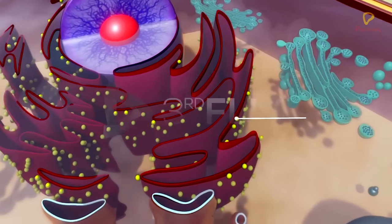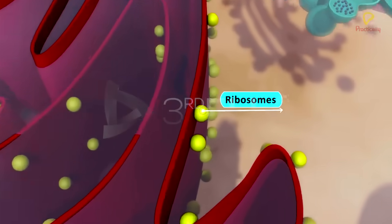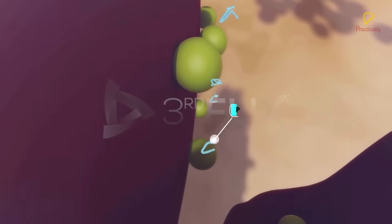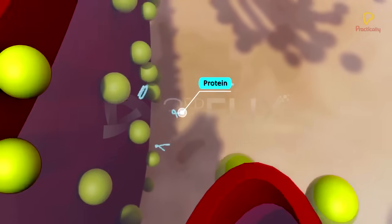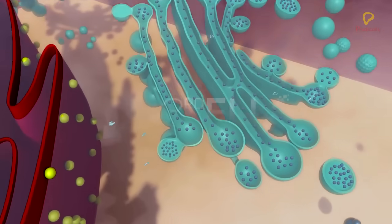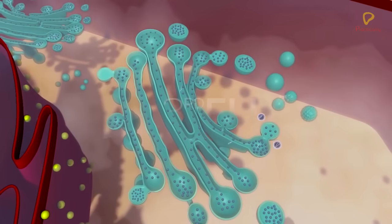A number of proteins are synthesized by ribosomes on the endoplasmic reticulum. These are modified in the cisternae of the Golgi apparatus before they get released from its trans-face.